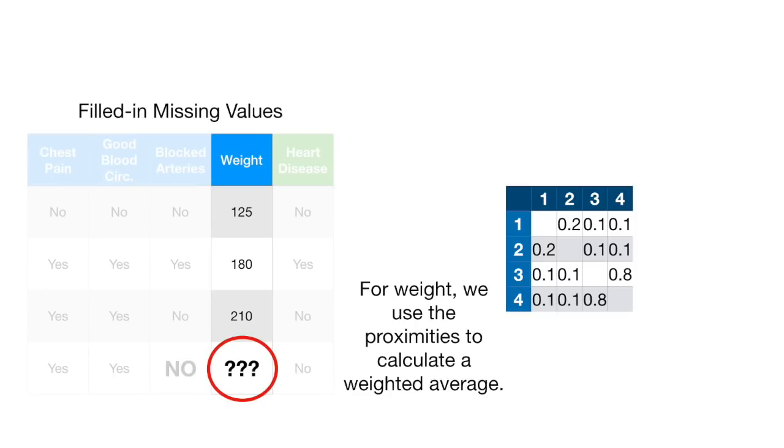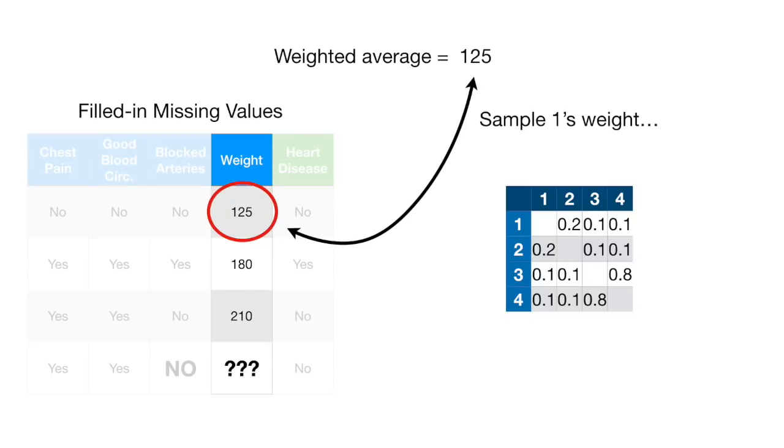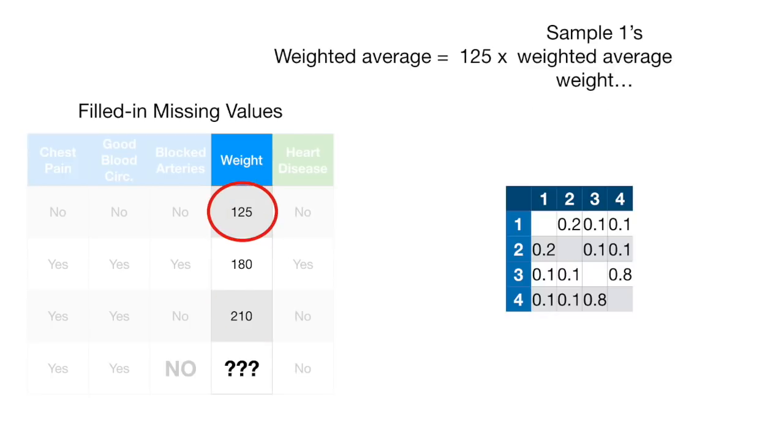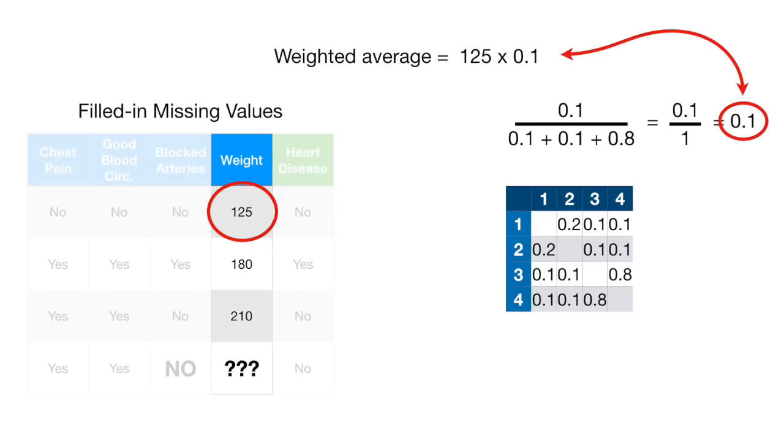For weight, we use the proximities to calculate a weighted average. In this case, the weighted average equals sample 1's weighted average weight. Sorry if there's any confusion between a patient's weight or a sample's weight and the weight used in the weighted average. To calculate that weight, we start with the proximity for sample 1 divided by the sum of the proximities. So, sample 1's weighted average weight is 0.1.